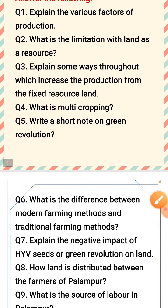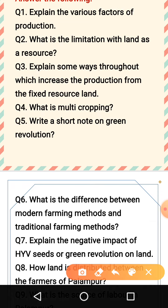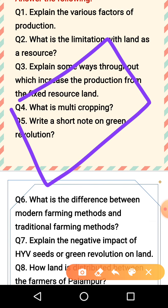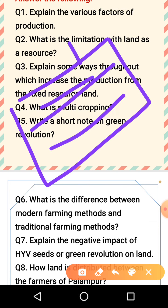What is multi-cropping? As I told you, from a particular piece of land in a particular year you produce two or three types of various crops — like wheat in one season, then tomatoes and other vegetables, then rice. That is multi-cropping.